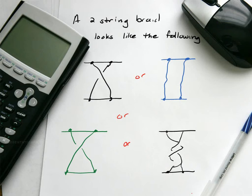There's also something called N-string braids. You could have three strings, five strings, a thousand strings. So they're objects.